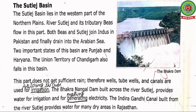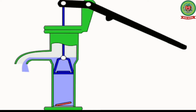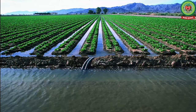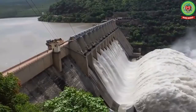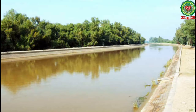The Bakra Nangal Dam, built across the river Sutlej, provides water for irrigation and for generating electricity. The Indira Gandhi Canal, also built from the river Sutlej, provides water for many dry areas in Rajasthan. So the Sutlej basin relies on these major infrastructure projects because it does not receive enough rainfall.